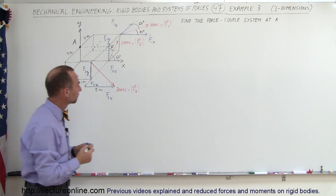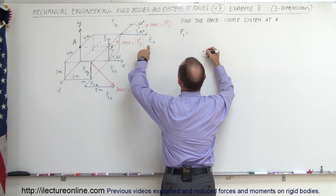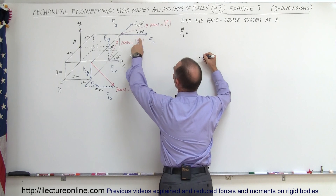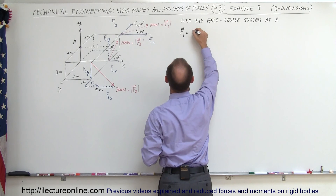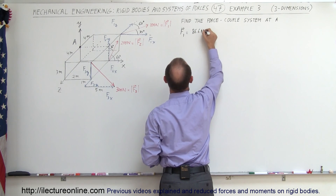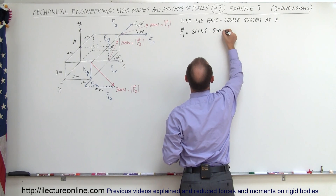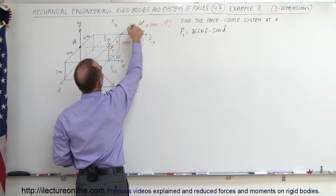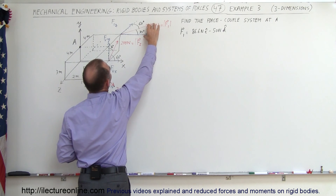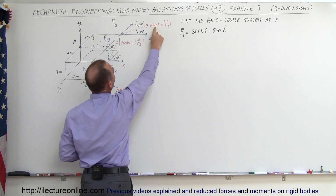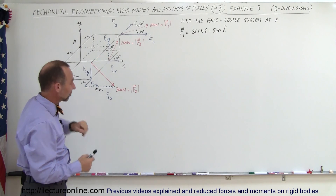Let's find the components now. F1x: F1 as a vector equals the cosine of 30 degrees, which is 0.866, times 100 — that would be 86.6 newtons in the x direction — and minus 50 newtons in the z direction. The z component is the sine of 30 degrees, which is 0.5; 0.5 times 100 is 50 newtons. Over here we have a 30 and 60 degree angle as well.